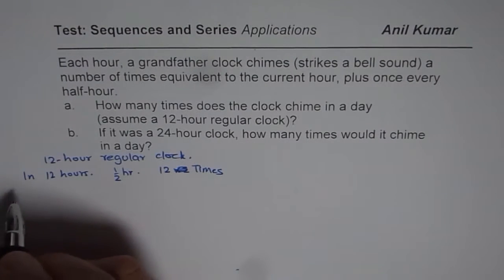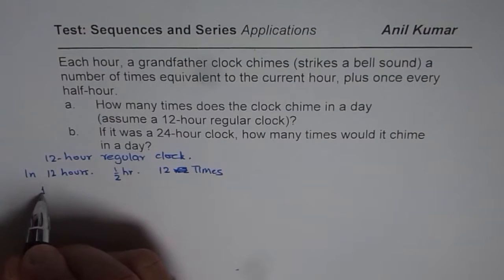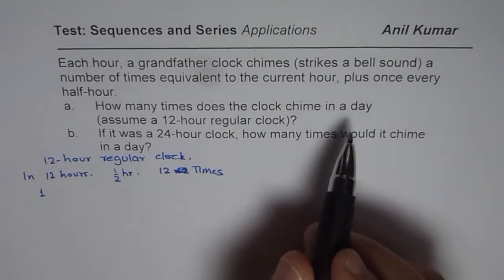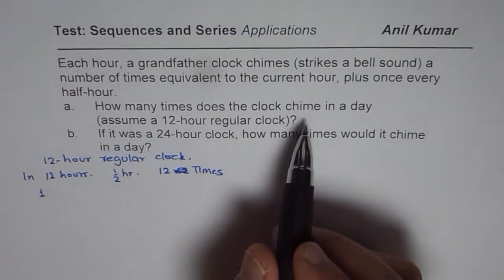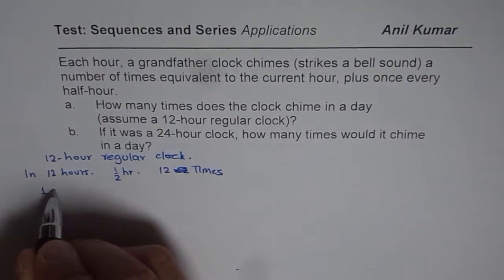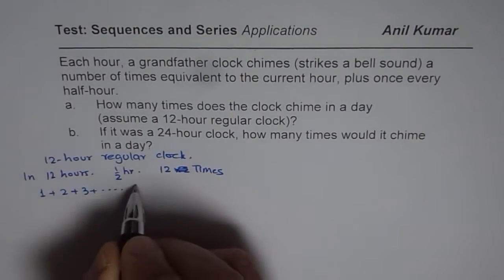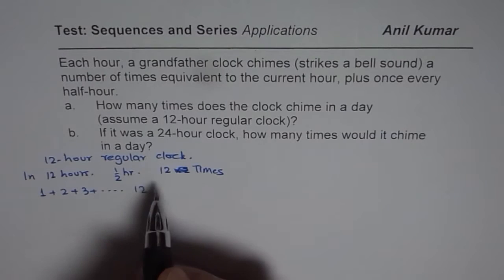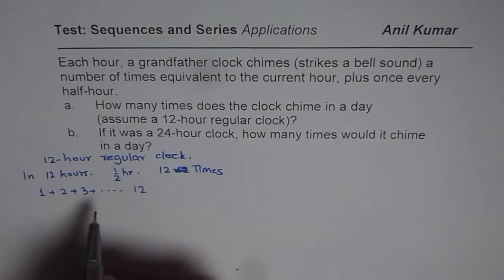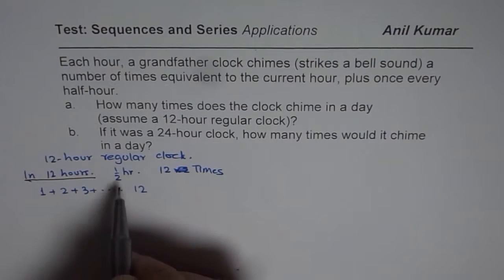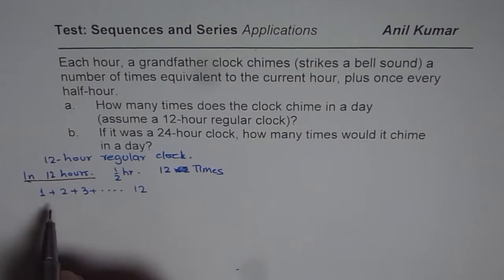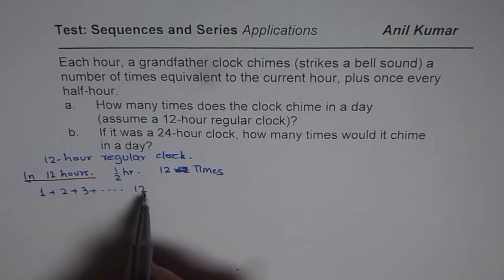Now in half a day, considering the hour chimes: if it is 1 o'clock it will chime 1 time, if it is 2 o'clock it will give 2 bells, and at 3 o'clock it gives 3 bells. So in 12 hours the number of hour bells will be 1 + 2 + 3 + ... + 12, and this will repeat in the next 12 hours.